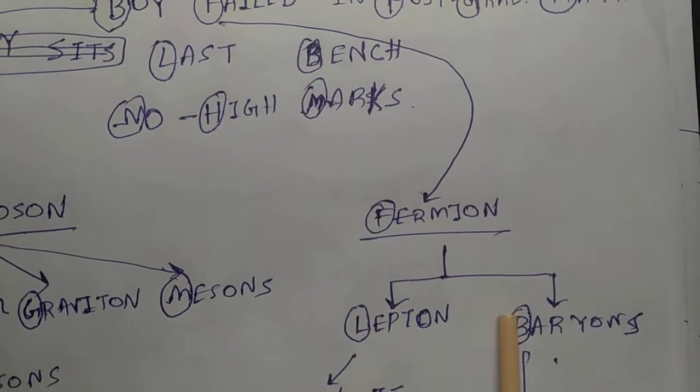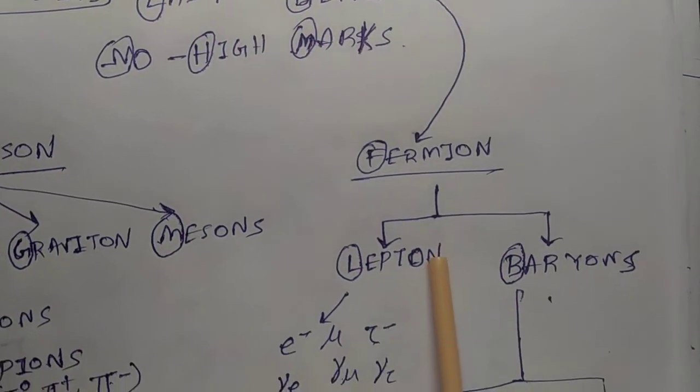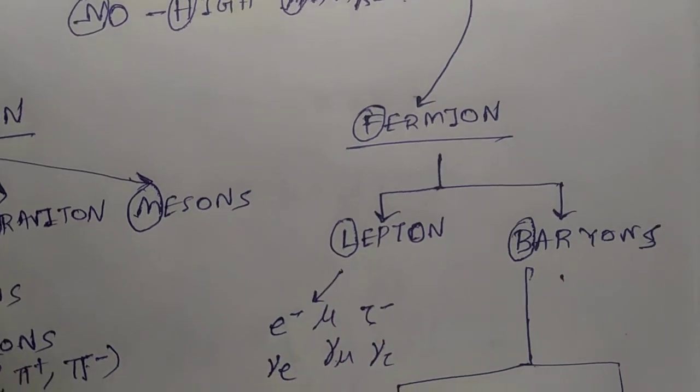L for leptons, B for baryons. What is the classification of leptons? There are six types of classification of leptons.